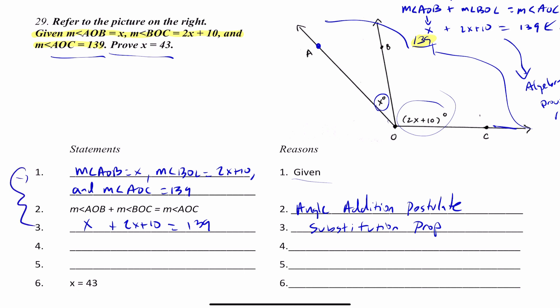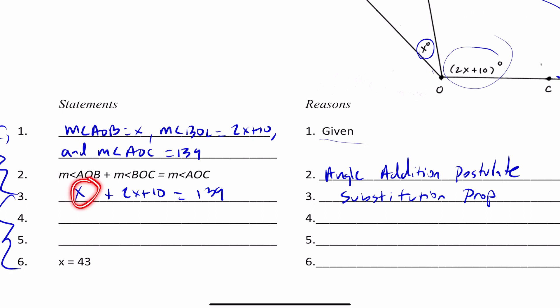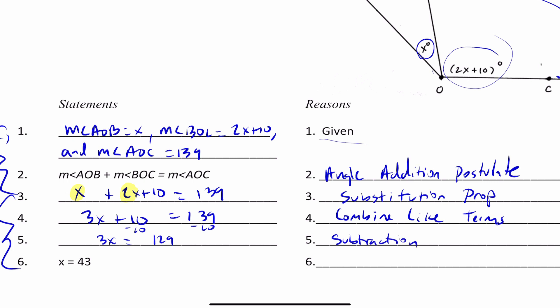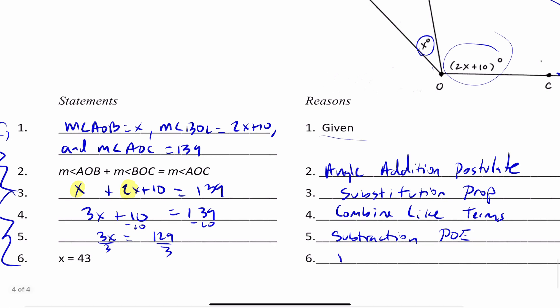Now I'm in the algebra phase. Combining like terms: X plus 2X plus 10 equals 139 becomes 3X plus 10 equals 139. Then subtracting 10 from both sides gives 3X equals 129 — that's the subtraction property of equality. Then dividing gives X equals 43 — that's the division property of equality.